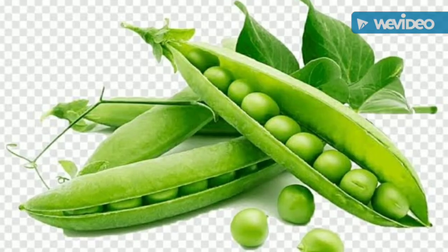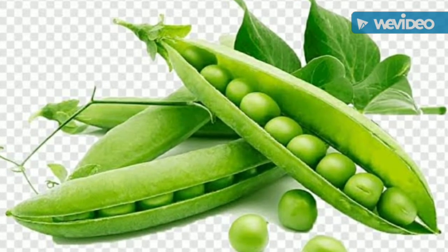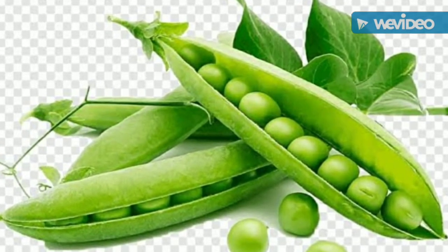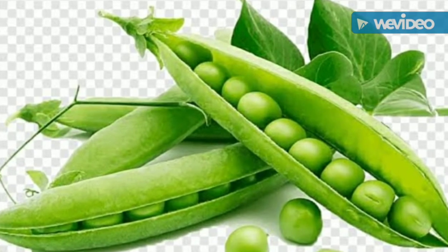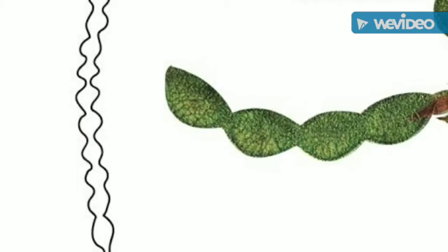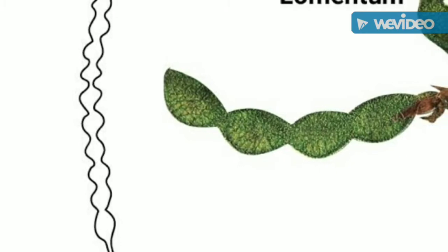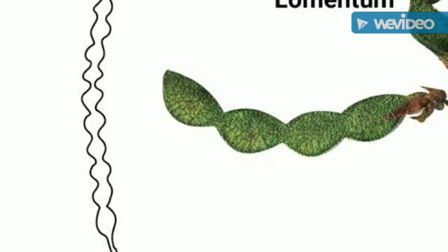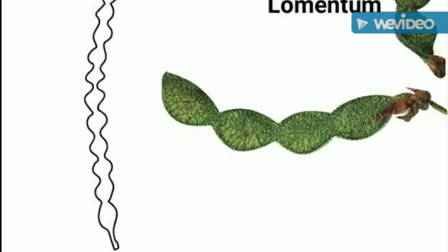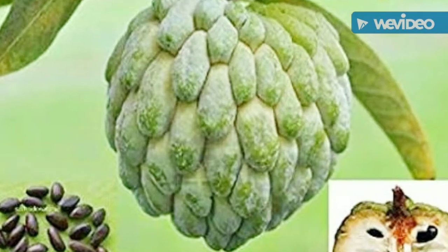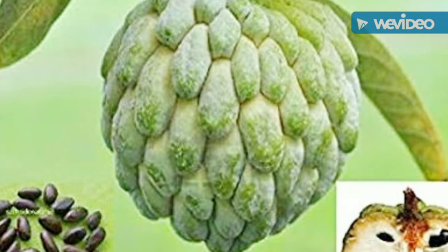This one is a legume fruit — a dehiscent dry fruit. Another one is lomentum of Acacia. It is an indehiscent dry fruit consisting of mericarps — small bits present in it.